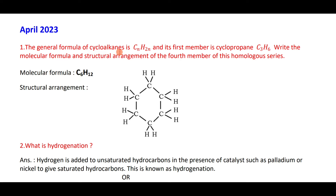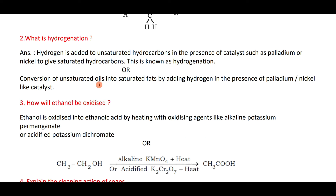The general formula of cycloalkanes is CₙH₂ₙ, and the first member is cyclopropane. The fourth member of the homologous series starting from cyclopropane is cyclohexane — C₆H₁₂.